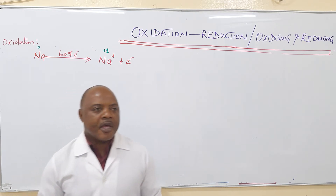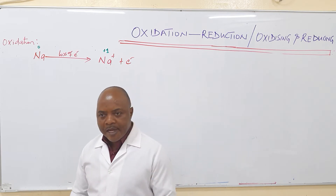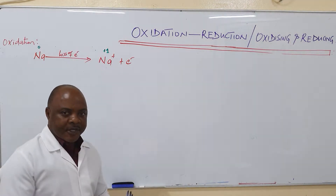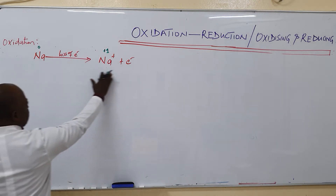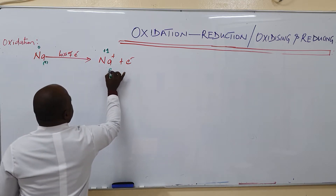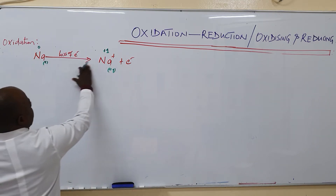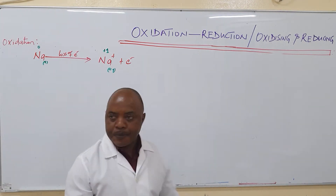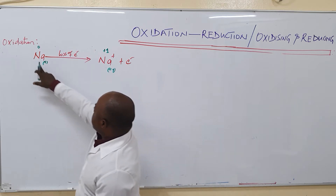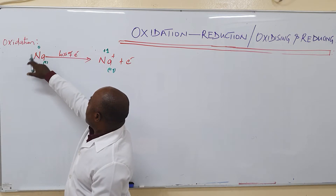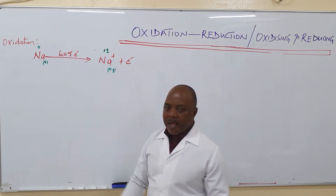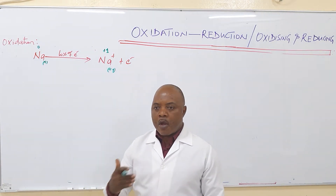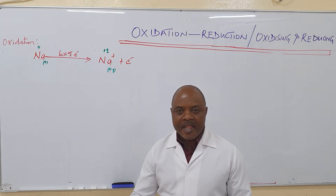The oxidation number of sodium here goes from 0 to plus 1. We say this is loss of electron. We are defining oxidation in terms of electron loss — loss of electron or an increase in the oxidation number during the process. So when a sodium atom loses an electron in solution, it acquires a positive charge and the oxidation state increases from 0 to plus 1. In that case, we say there is an oxidation taking place. Oxidation is loss of electron or an increase in the oxidation number.